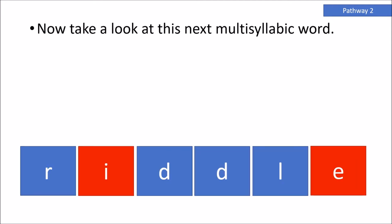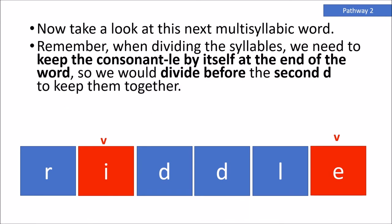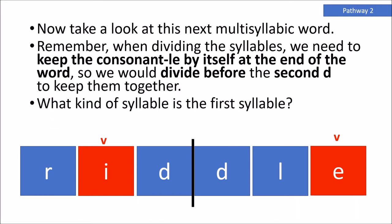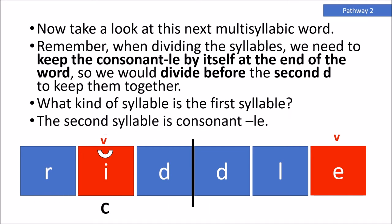Now take a look at the next multisyllabic word. I'm going to go ahead and mark the vowel spots. When dividing the syllables, we need to keep the consonant LE by itself at the end of the word, so we would divide before the second D to keep them together. The first syllable is closed — closed syllables have a vowel closed in by a consonant, and the vowel makes the short vowel sound, so this first syllable would be read as 'RID.' Our second syllable is consonant LE; the E is silent, so it would be pronounced 'DL.' When put together, we read RID-DLE, RIDDLE.